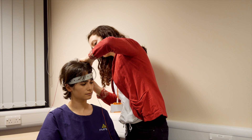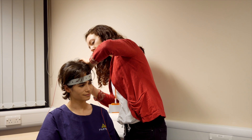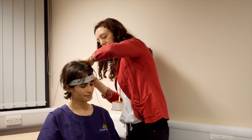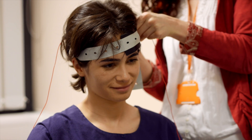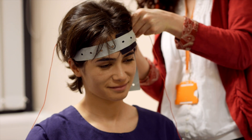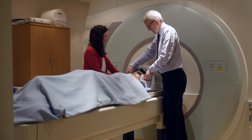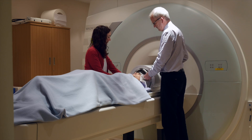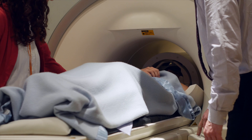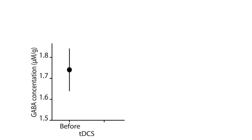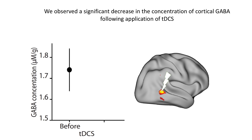To temporarily reduce cortical GABA, we applied anodal transcranial direct current stimulation (TDCS) to the region of cortex known to store the cortical memory. We then measured the change in cortical GABA induced by brain stimulation using ultra-high field MR spectroscopy. Consistent with a number of previous studies, we found a significant decrease in the concentration of cortical GABA with application of brain stimulation.